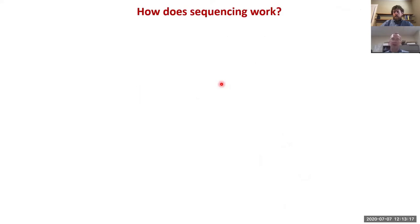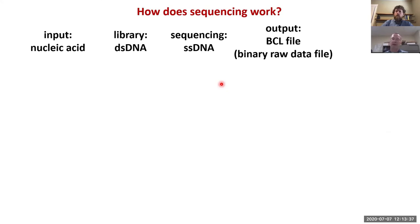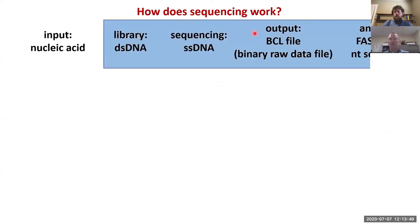A quick overview of how sequencing actually works. As input, you can have any nucleic acid and that nucleic acid is turned into a double-stranded DNA library. Before sequencing, the double-stranded DNA library is denatured to single-strand molecules, then sequencing happens and you get an output file called a BCL file which is the raw data file, then that's converted into an analysis file which is a FASTQ file. The blue part is what's always the same in every sequencing. What is different is the input and how you get to the library.